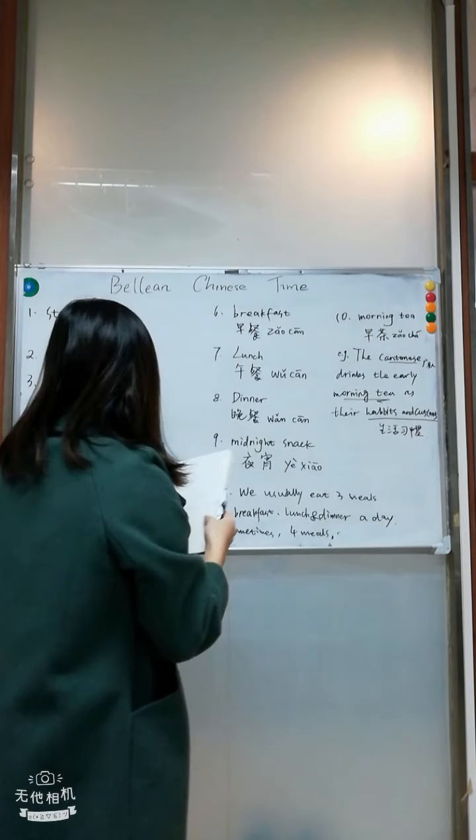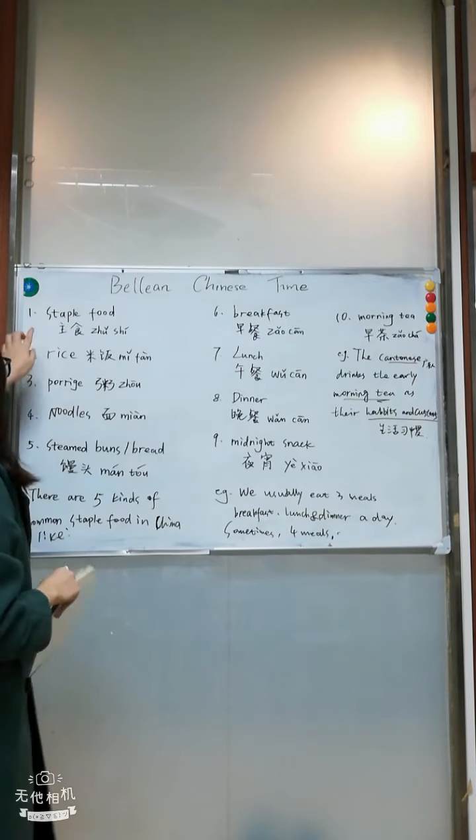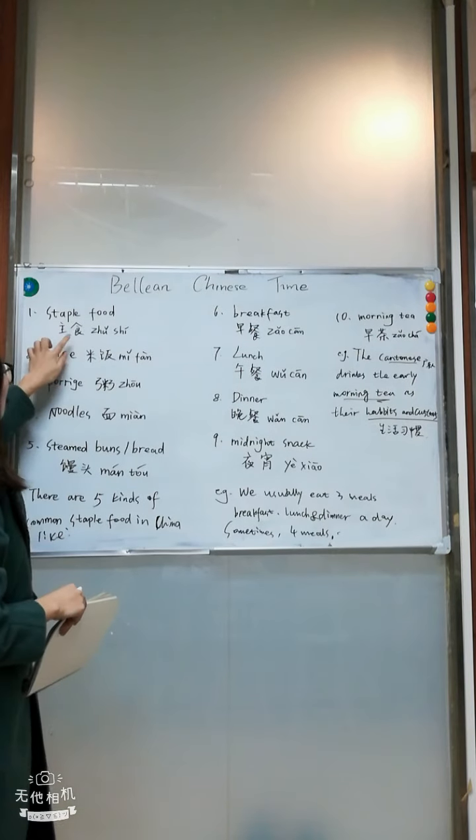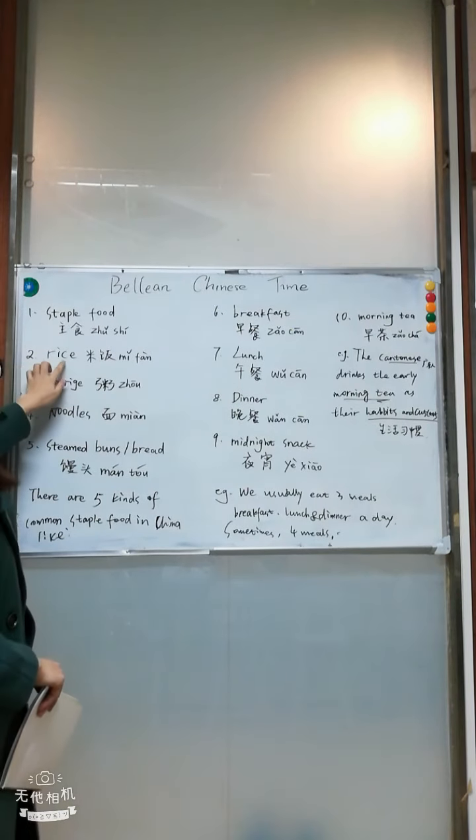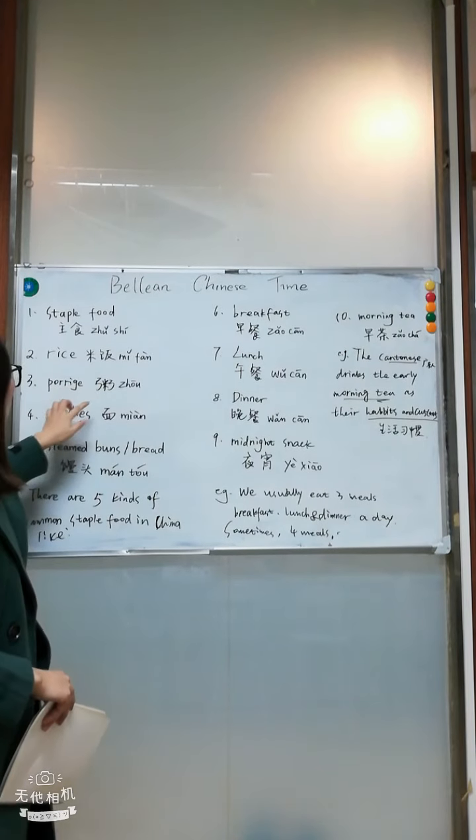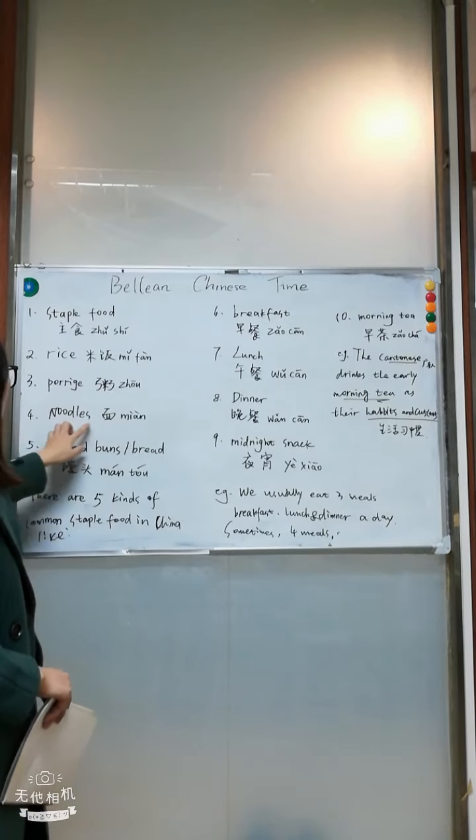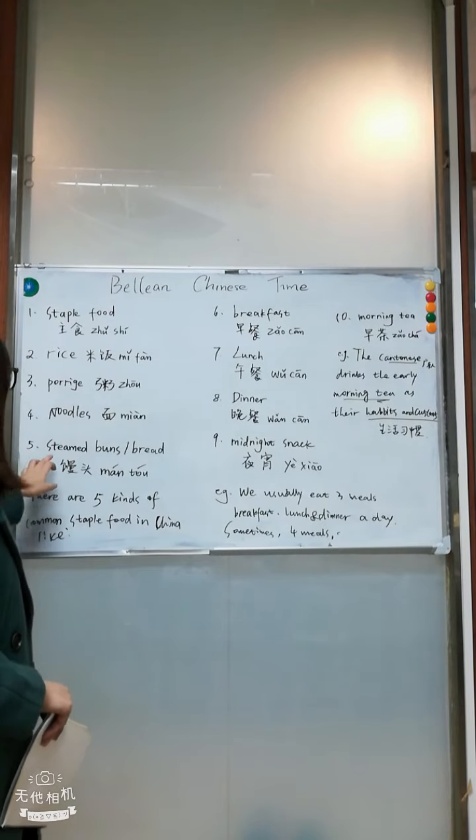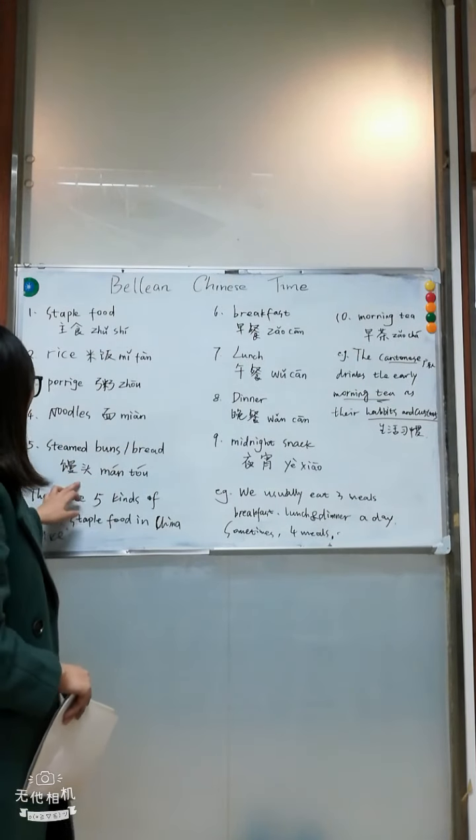Okay, let's repeat those words. Staple food, 主食, rice, 米飯, porridge, 粥, noodles, 麵, steamed buns of bread, 饅頭.